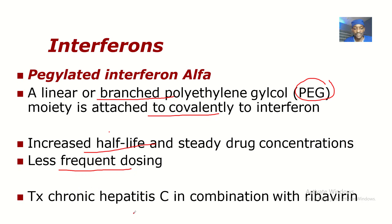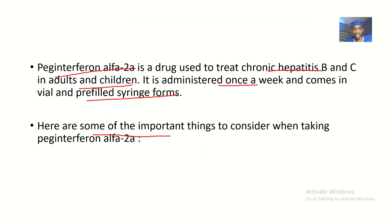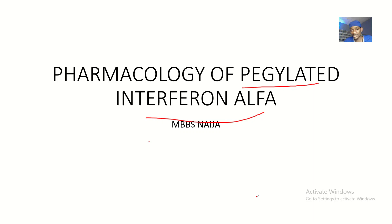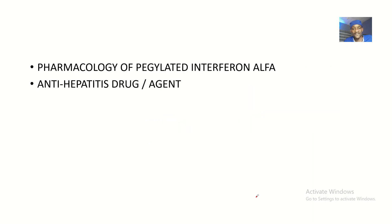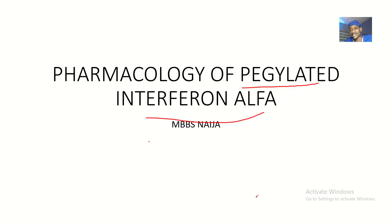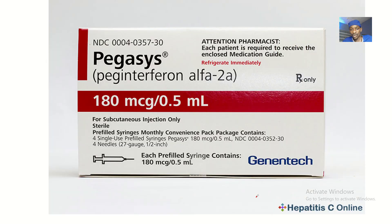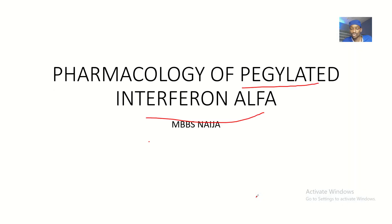For treatment of chronic hepatitis C, when pegylated interferon alpha is combined with ribavirin, it is highly effective at treating hepatitis C. That covers the pharmacology of pegylated interferon alpha, also known as peg interferon alpha 2a.